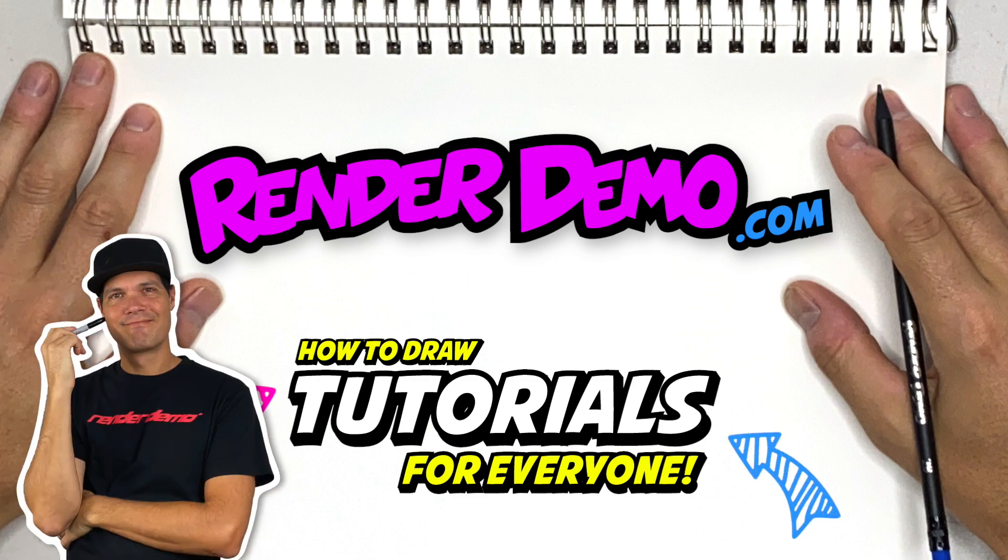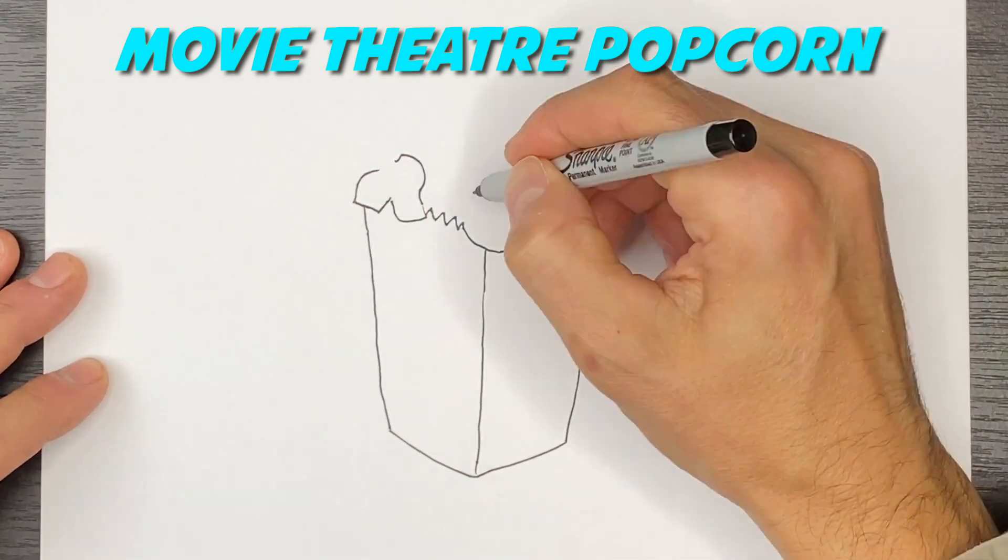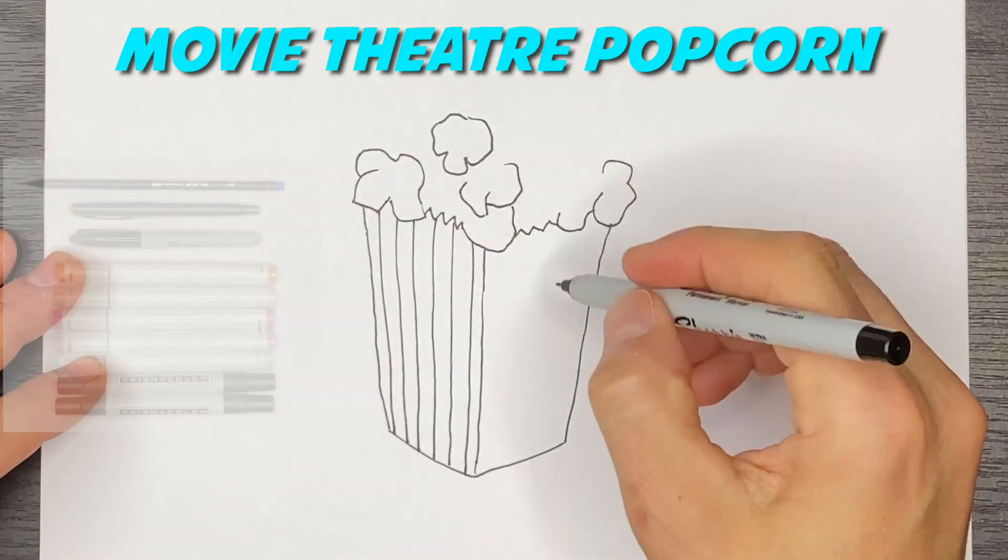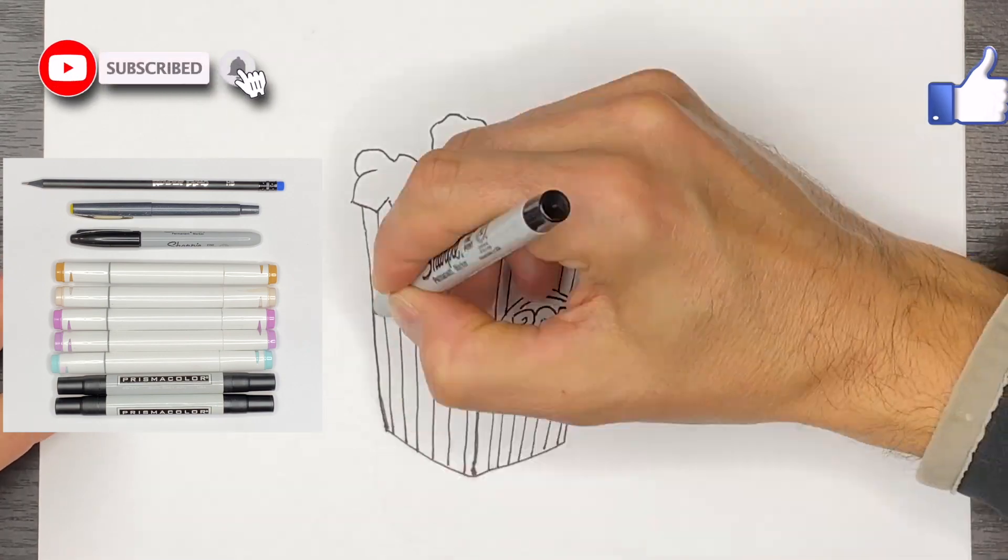Hey guys, welcome back. I'm Mark. Today we'll be drawing a box of popcorn for the movie theater. So grab yourself a sheet of paper, a pen, and some colored markers, and let's get started.